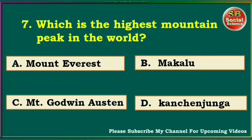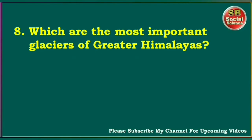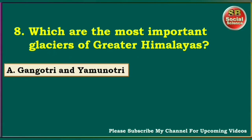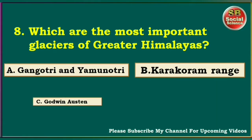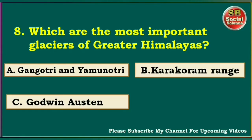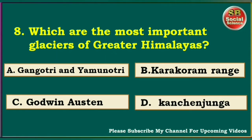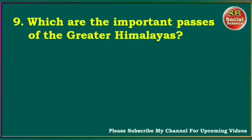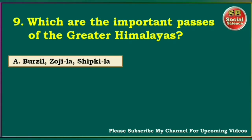Which are the most important glaciers of the Greater Himalayas? Gangotri and Yamunotri, Karakoram Range, Godwin-Austin, Kanchanjunga. The right answer is Gangotri and Yamunotri. Which are the important passes of the Greater Himalayas? Banihal, Zojila, Shipkila. The right answer is Banihal, Zojila, Shipkila.